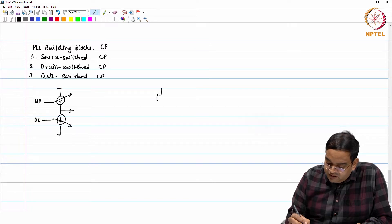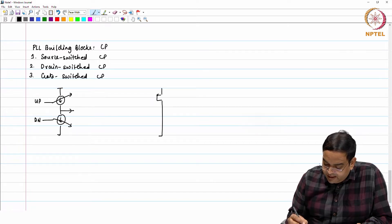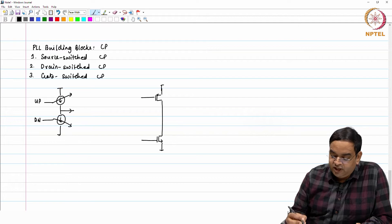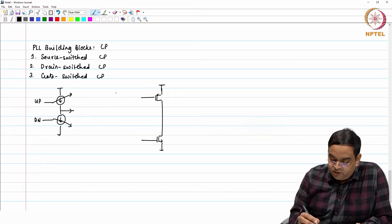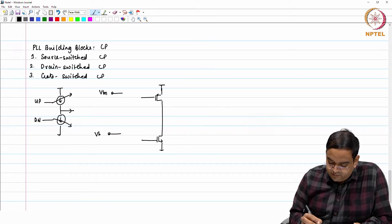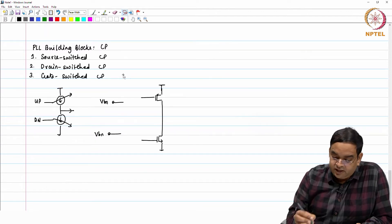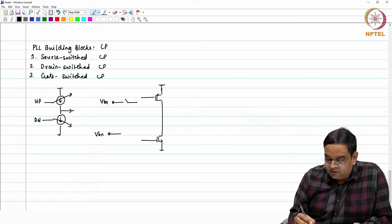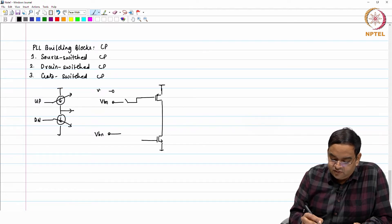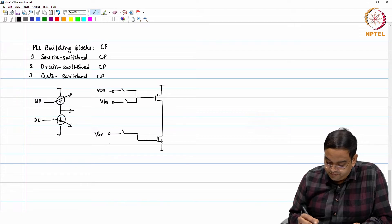I have a PMOS current source and an NMOS current source like this. When I am going to disable the current sources, I am having potential VBP and similarly potential VBN and I am going to connect between this and I will have another switch. This is the switch which connects here and then I have another switch which is VDD which connects to VDD. Ground or you can say 0 potential.